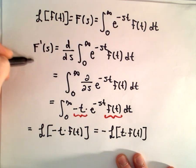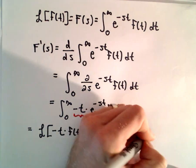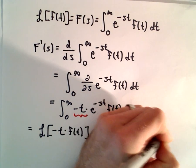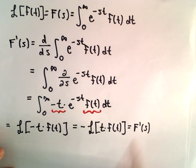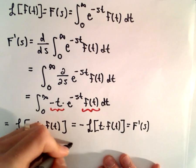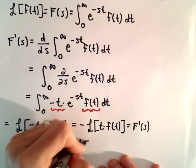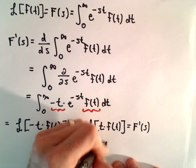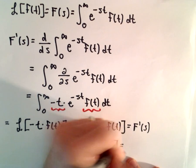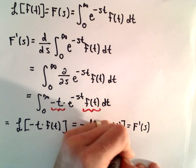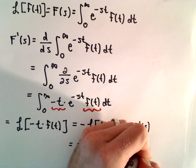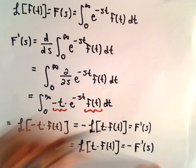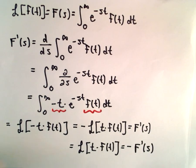What we started with was F prime of s. So if we multiply both sides by negative one, we get the result that we set out to show: that if we multiply our original function by t, we simply take the negative of the derivative of F of s. Very straightforward to show. So let's do a quick example with it.